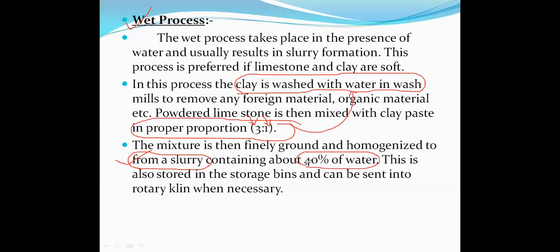We add water in the wet process because cement achieves physical strength only in the presence of water. The setting and hardening properties of cement increase only under aqueous or hydraulic conditions. So the raw materials are taken in a 3 to 1 ratio and mixed with a sufficient amount of water.